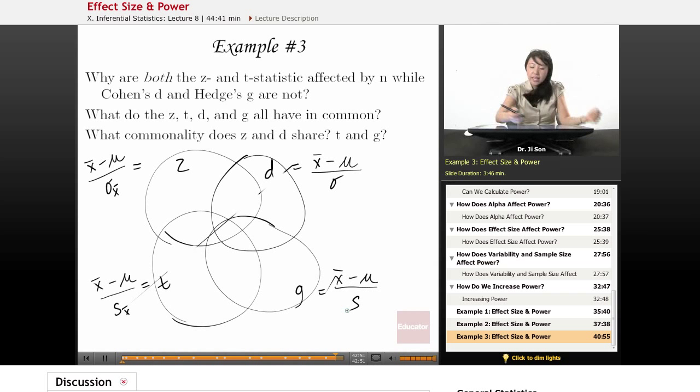Okay. So why are both the Z and T statistic affected by N, while Cohen's D and Hedge's G are not? Well, the thing that these two have in common is that these are about standard error, right? And standard error is either sigma divided by square root of N, or, I wish this was bigger,